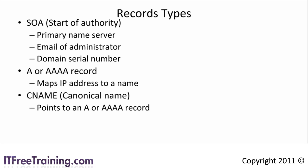Originally DNS was designed only to resolve host names to IP addresses. Since then it has expanded to allow users to find resources and services on the network. To do this, DNS has service records or SRV records. A service record allows a client to locate services on the network using DNS. Service records are used by Active Directory to allow a client to locate a domain controller — this is why DNS is so important in a Windows environment.